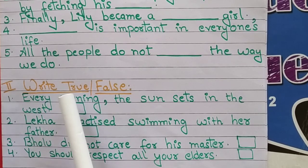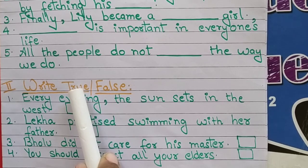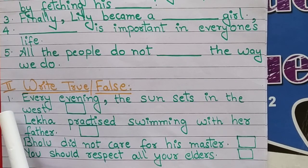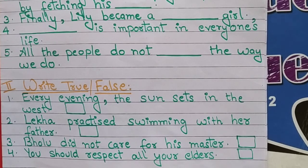Second section is right — true or false. Yahan pe jo bhi statements diye hain, aap in statements ko parh ke batao ge. Dekho ge ki kaun sa statement true hai aur kaun sa false hai. Agar statement right hai, true hai, to aap T likhoge. Agar statement wrong hai, false hai, then you will write it down false in the box. First one: 'Every evening the sun sets in the west.' Har ek evening ke time mein jo sun hota hai set karta hai west ki side. So you have to write it down here — true or false in this box.